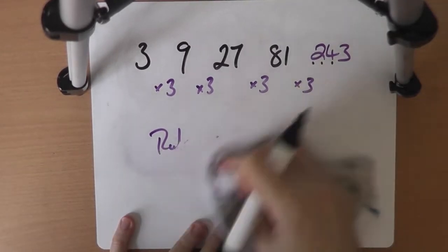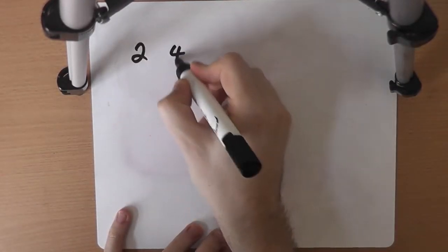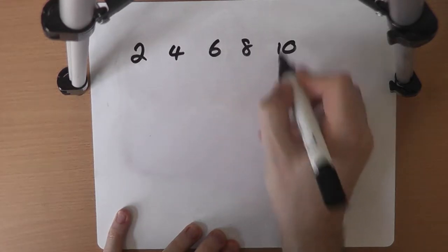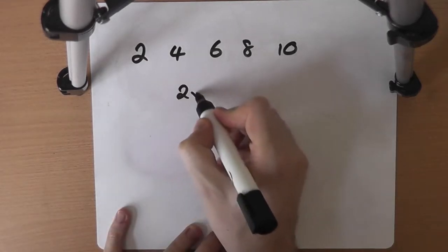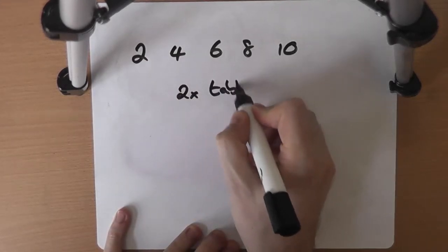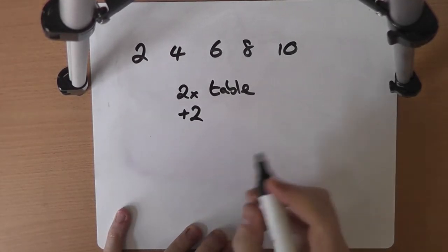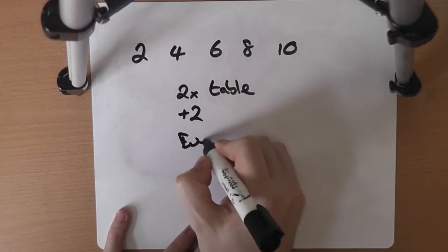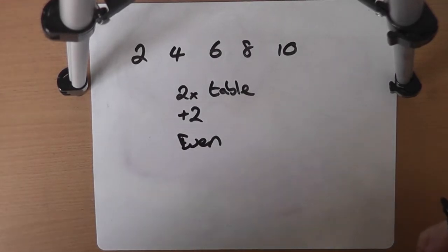We can have very simple defined sequences, defined non-numerically. Something like 2, 4, 6, 8, 10 — yes, that's the 2 times table, going up in 2s, adding 2 each time, starting from 2. But it's also the even numbers. And it's important to recognise that that is the case.